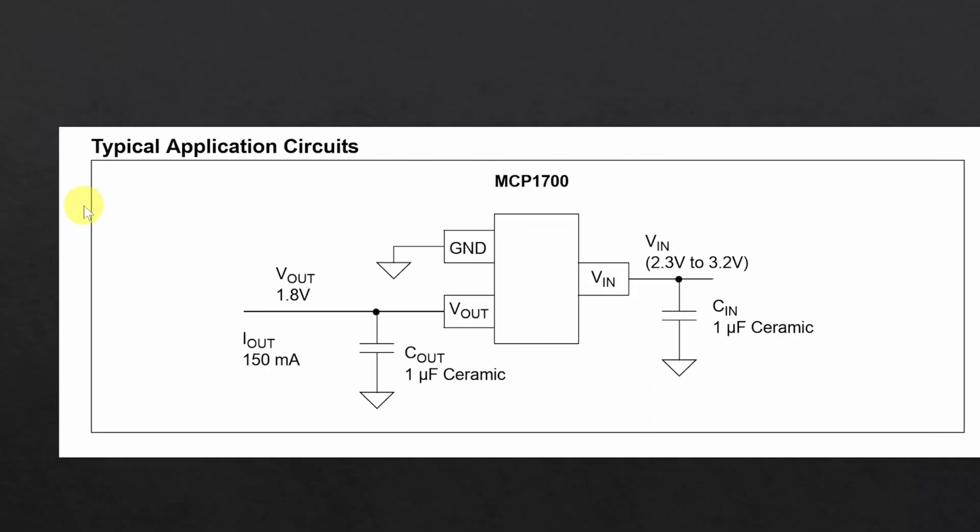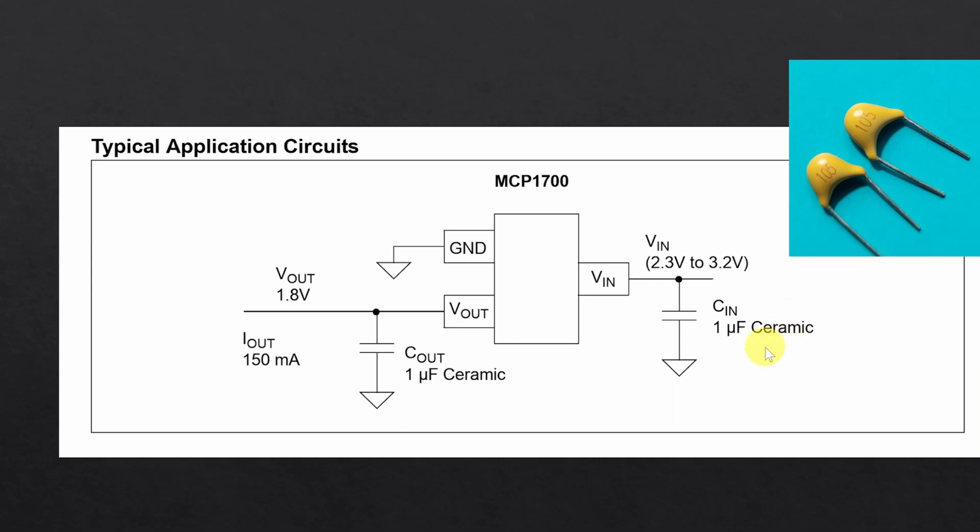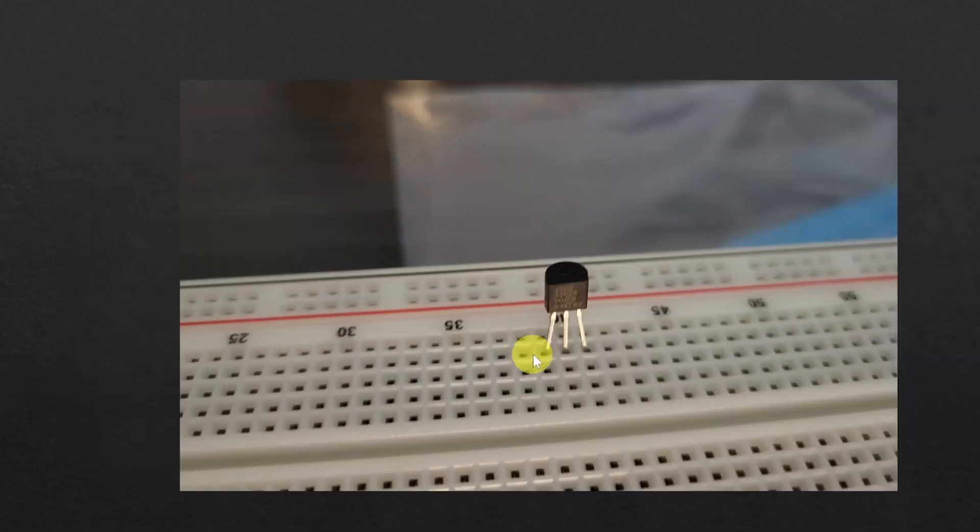To use this device in your project, you will just need two 1uF ceramic capacitors, one at the input and another at the output. If you face the flat side of the IC package, the middle pin will be the input pin, the pin on the right will be the VOUT pin, and the pin on the left will be the ground pin.